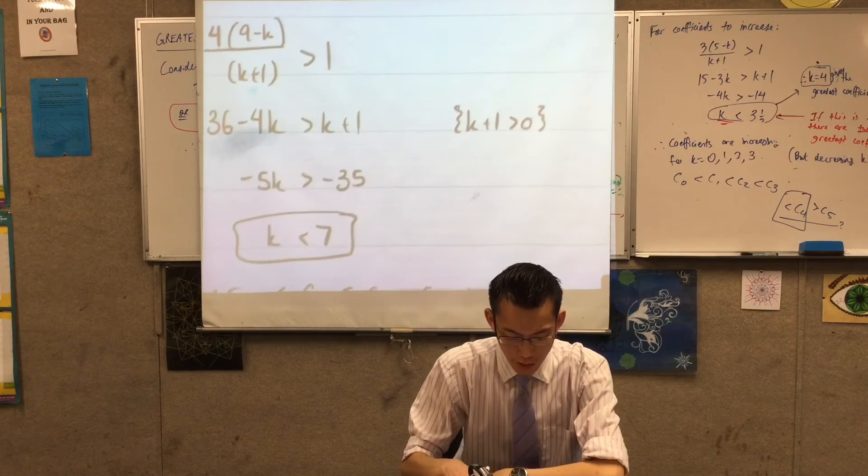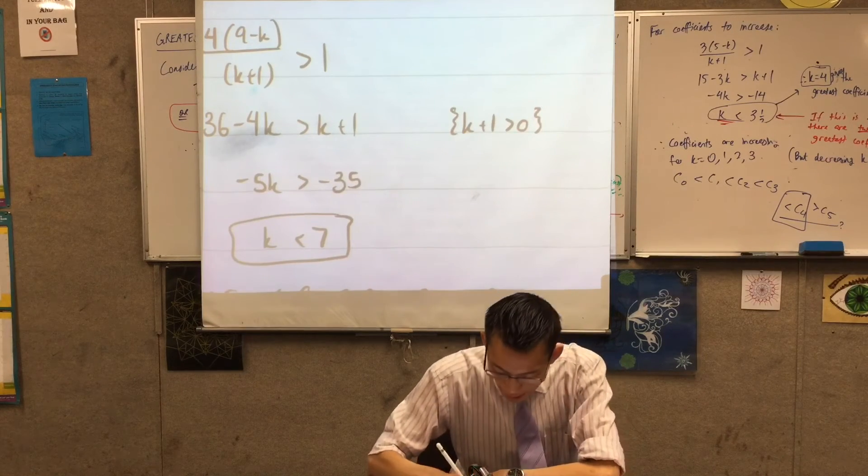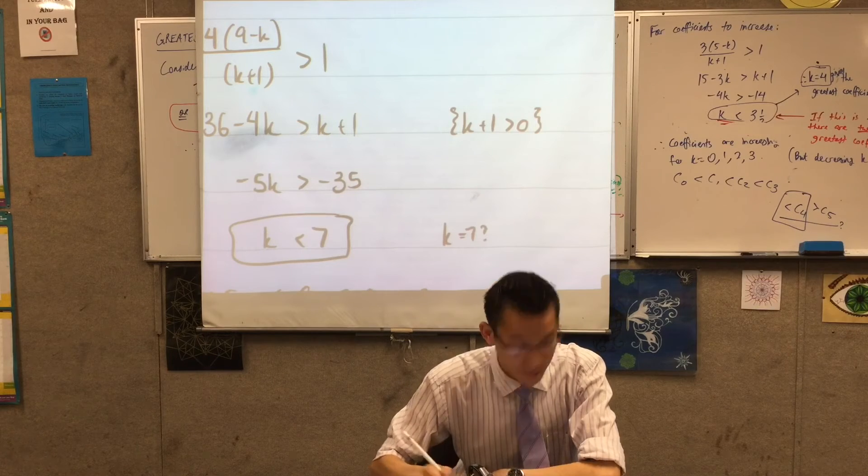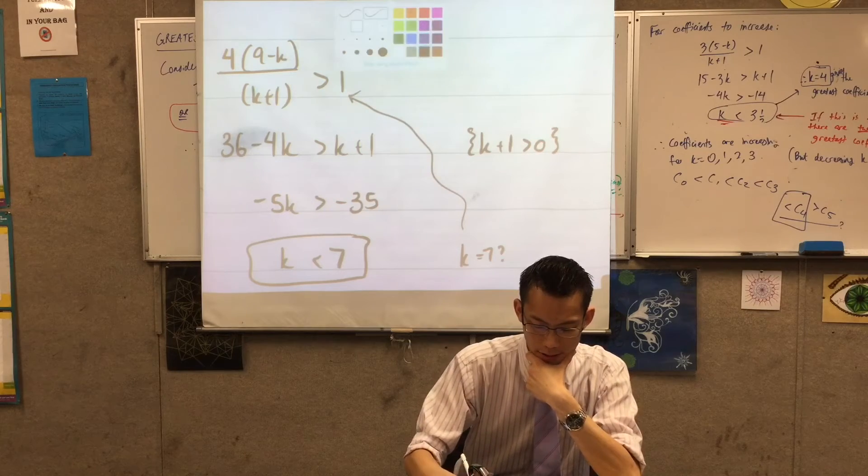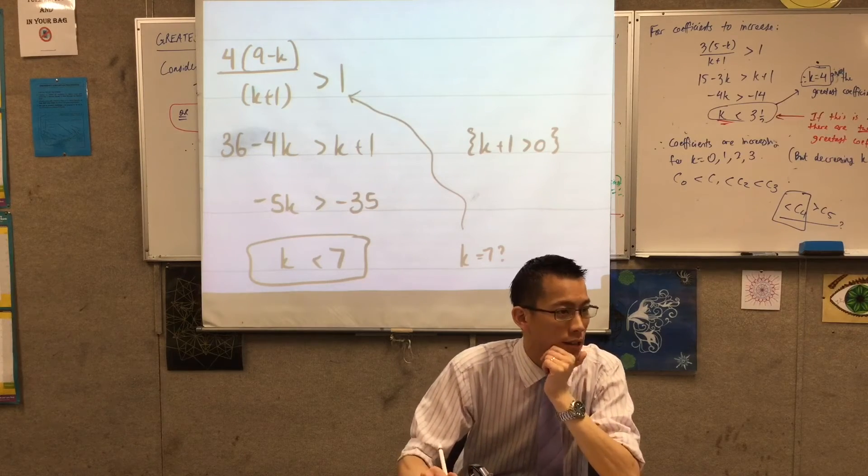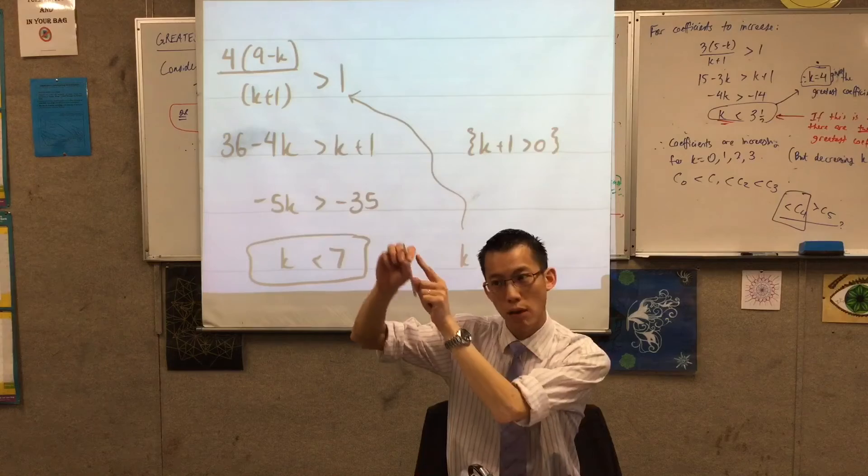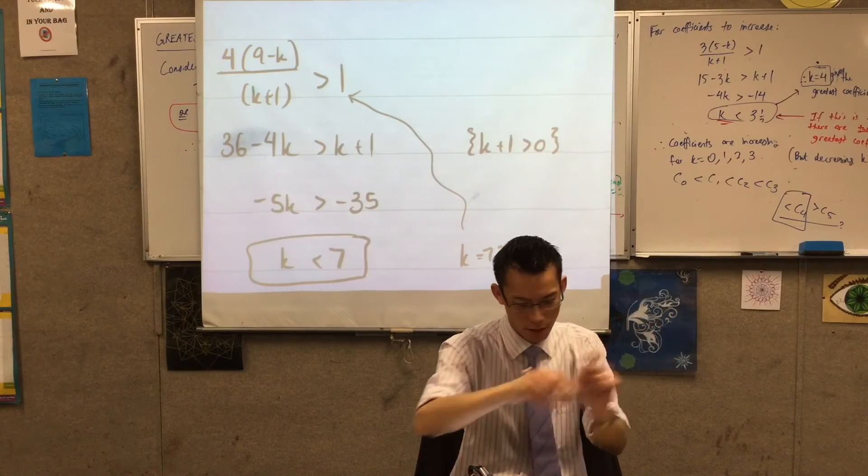Okay if k is less than seven, what happens at k equals seven? K equals seven. Well I can actually just go back to my original line up here and I can just evaluate the thing. Like this is telling me what do I have to multiply to get to the next term. Have a look.